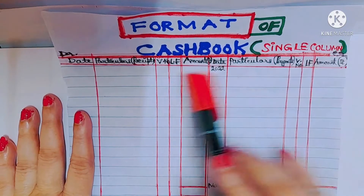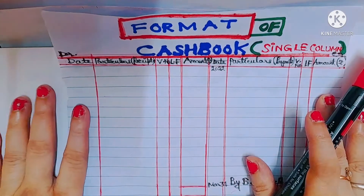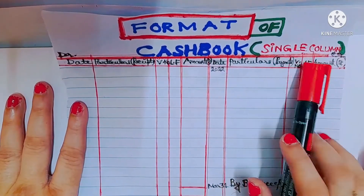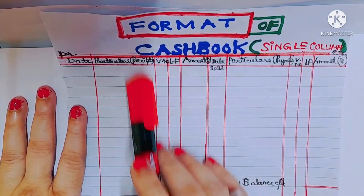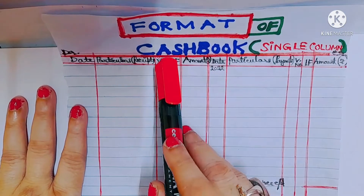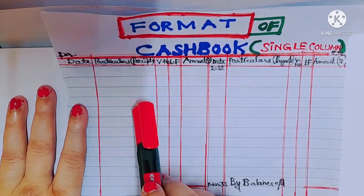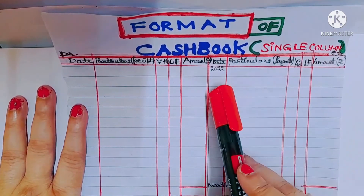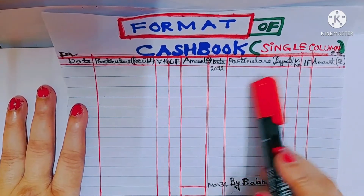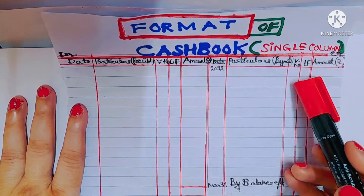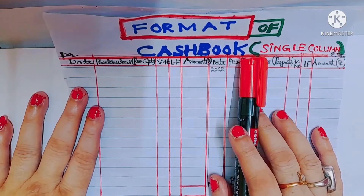Inflow of cash is recorded on the debit side; outflow of cash is recorded on the credit side. All incomes are recorded on the debit side; all expenses are recorded on the credit side. This is the single column cash book format: date, particulars, receipt side, voucher number, ledger folio, amount on the debit side; and date, particulars, payments, voucher number, ledger folio, amount on the credit side.